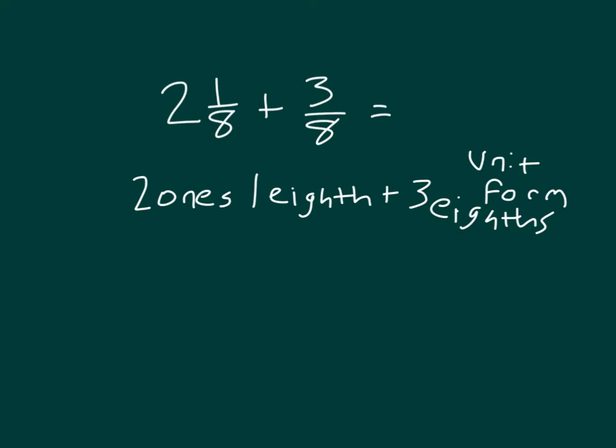How many ones are there in all? Right, 2. How many eighths are there in all? Well, we have 1 eighth plus another 3 eighths. That would be 4 eighths. So we have then 2 ones along with 4 eighths.